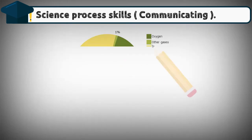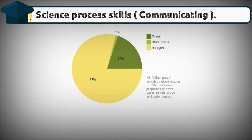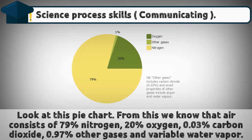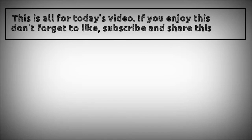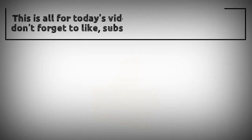Here is an example. Look at this pie chart. From this, we know that air consists of 79% nitrogen, 20% oxygen, 0.03% carbon dioxide, 0.97% other gases, and variable water vapor. This is all for today's video. If you enjoyed this video, don't forget to like, subscribe, and share.